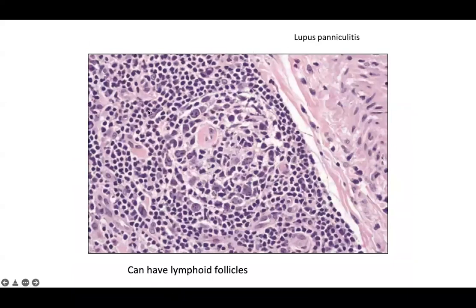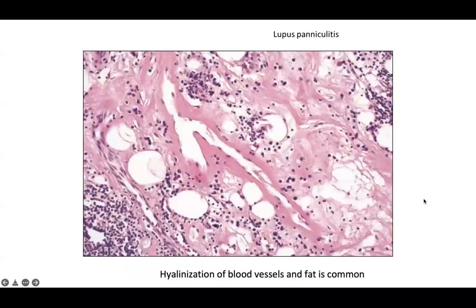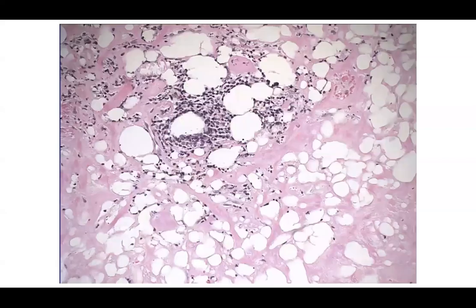Another example of lymphoid follicles trying to form within areas of lupus paniculitis. Many times you can see hyalinization of blood vessels and fat, as well as lipomembranous change, making it look very similar to lipodermatosclerosis. However, the clinical picture of lipodermatosclerosis is much different than the clinical picture of lupus paniculitis.